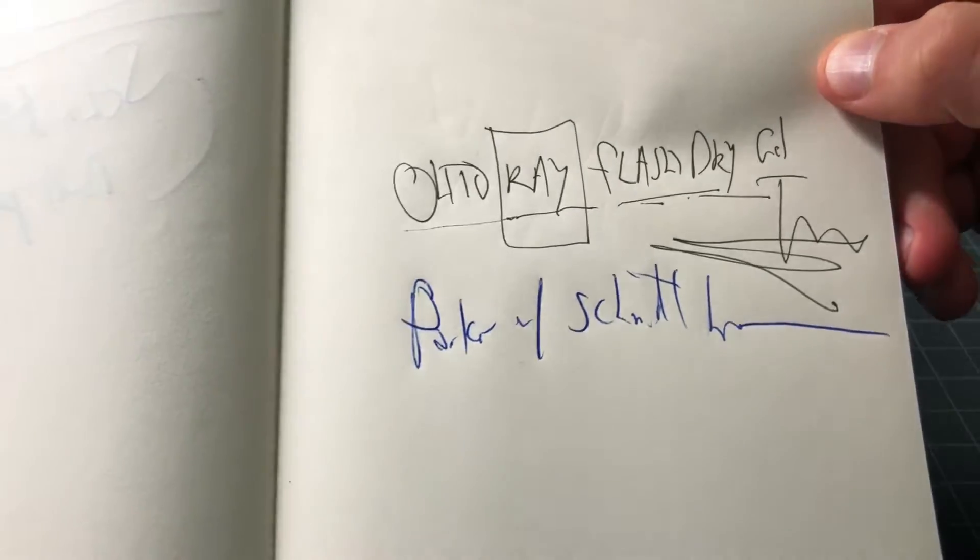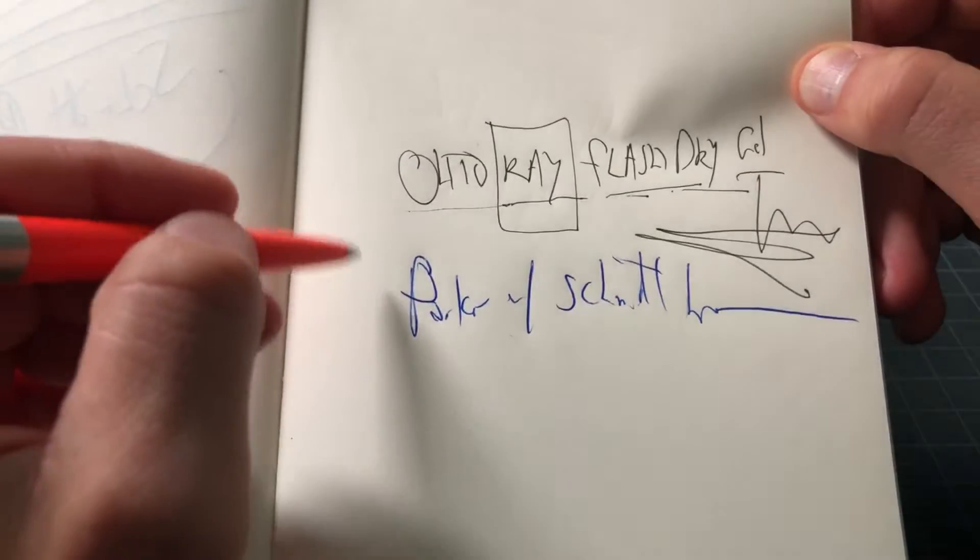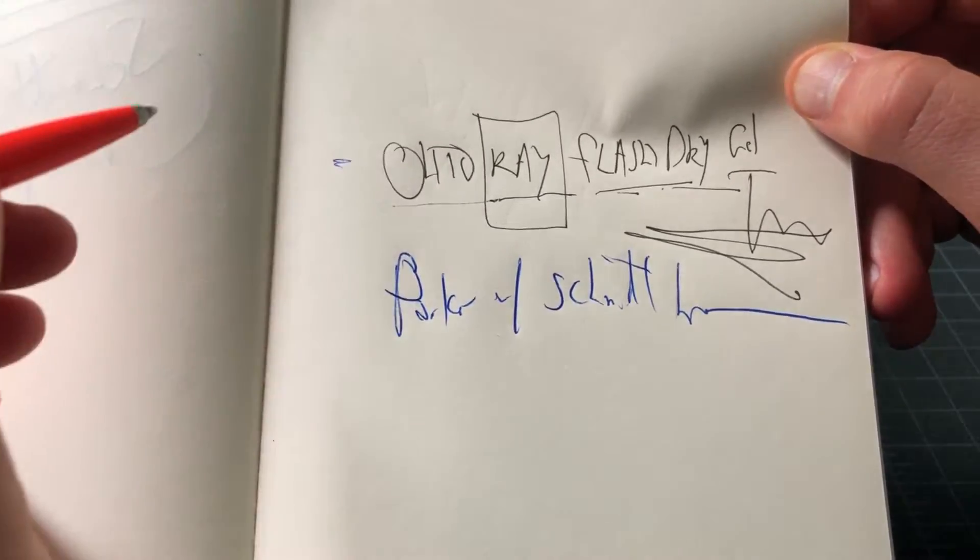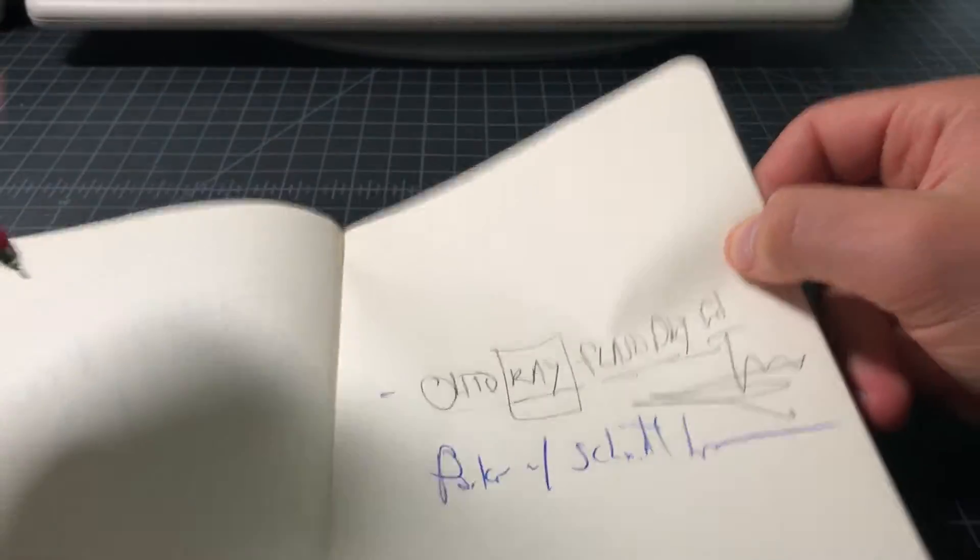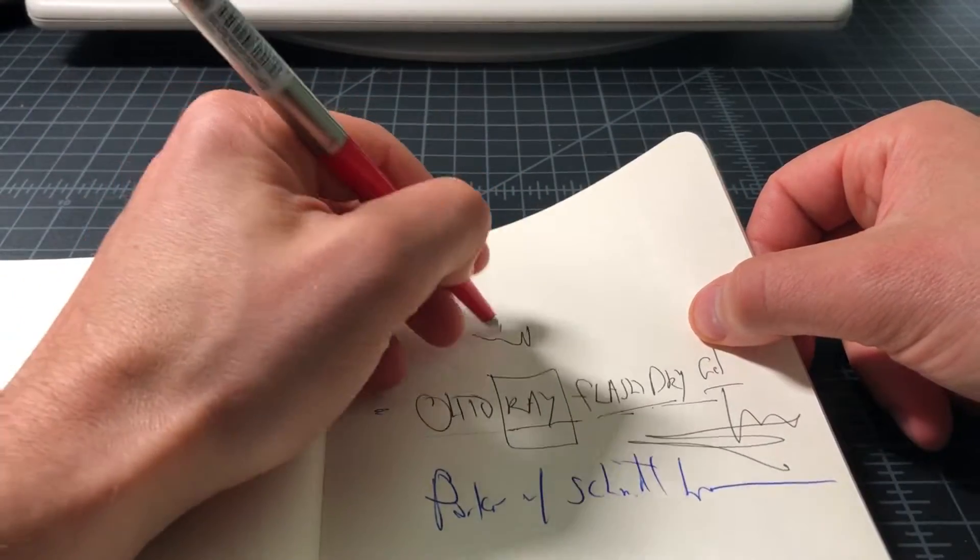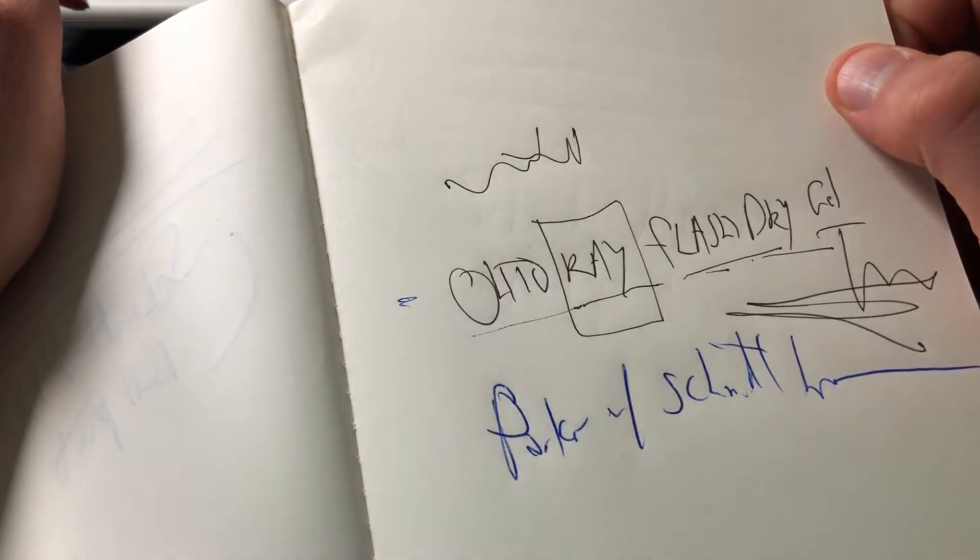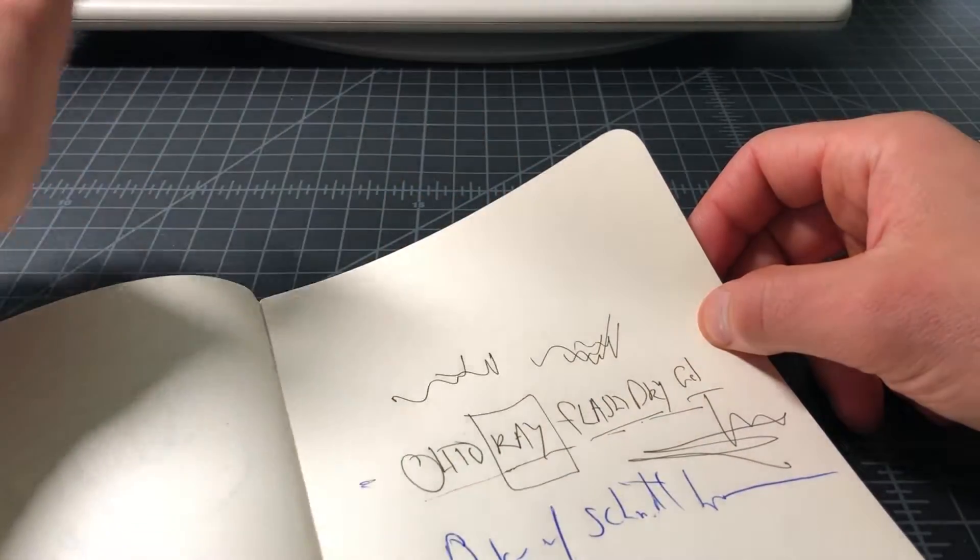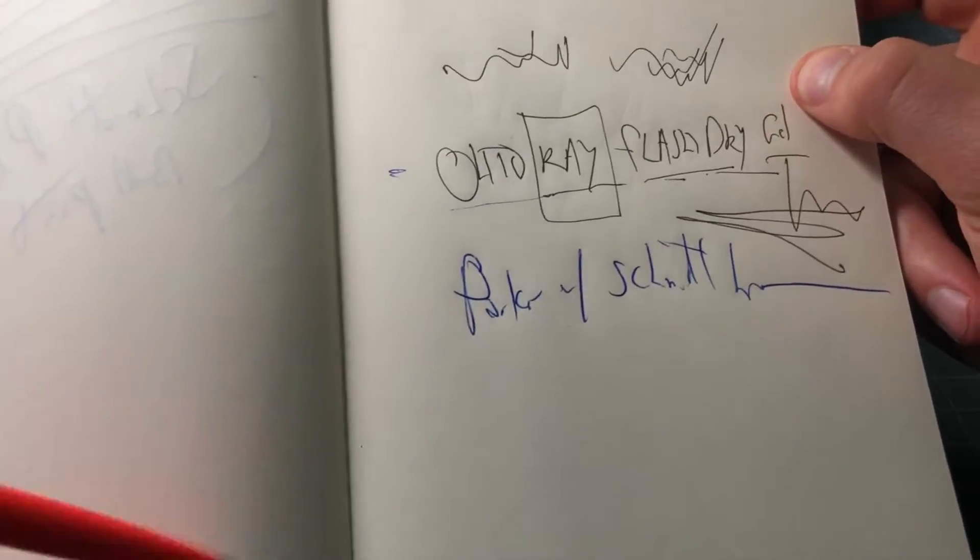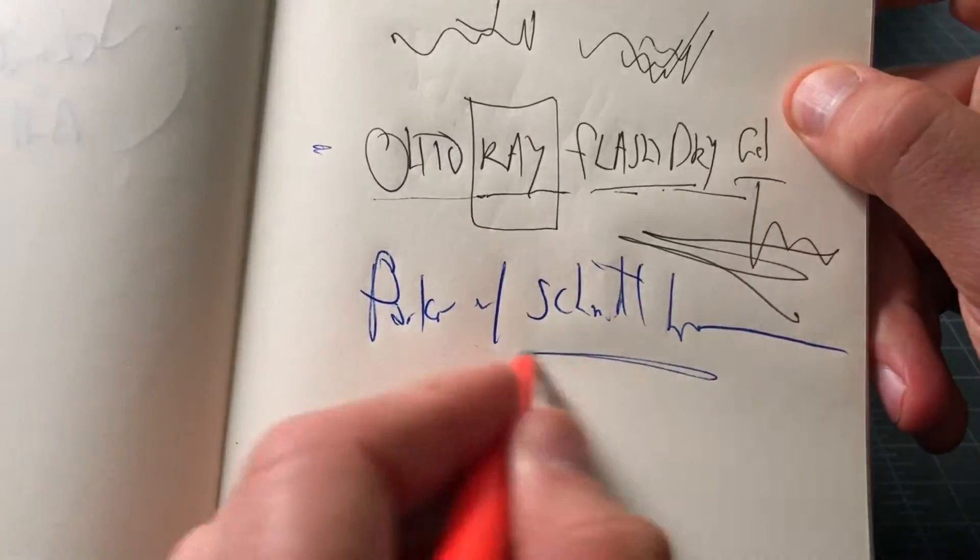Just for reference, this gel ink is not that bad. It's smooth, it's definitely on the thin side - it's a 0.5 but it really writes a little bit more like a 0.4, like a smooth 0.4 is what it feels like to me. I love the Schmidt EasyFlow 9000.